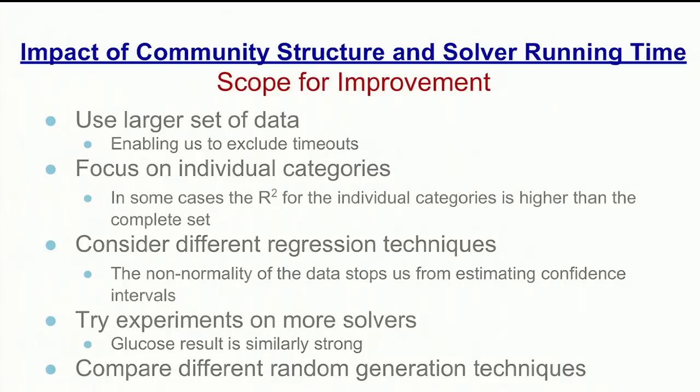We are very happy with our results so far, but there is large scope for improvements. We want to use a larger set of data to exclude timeout results, but sources comparable to the SAT competition are limited — each year the competition changes the computers, solvers, instances, and timeout values. We are running instances on our own development machines, though this takes considerable time with timeouts of two to three hours. We're also going to focus on individual categories such as industrial, random, or hard combinatorial instances, since the overall R² for the entire dataset was sometimes lower than for individual categories, suggesting different models should be used for each.